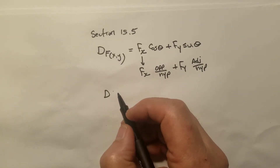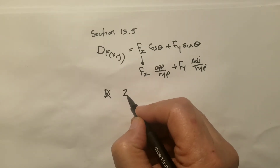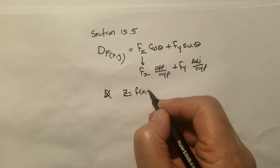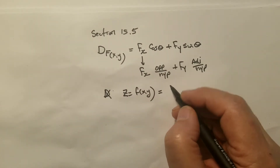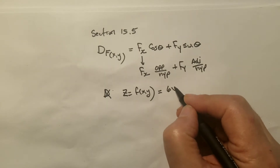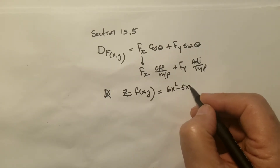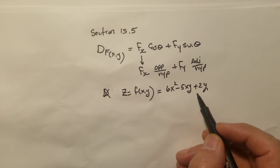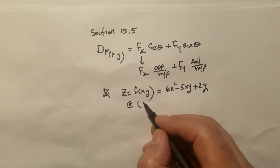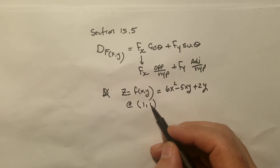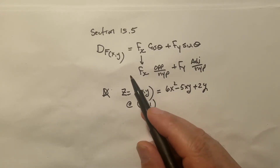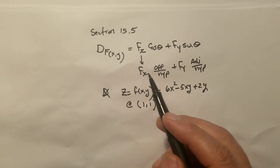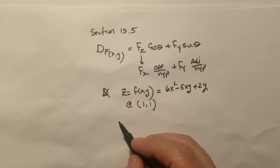For example, if I give you a function z = 6x² − 5xy + 2y, which represents a surface, at the point (1, 1), I want to know how fast you are going up or going down. If the directional derivative is positive, you're going up; if it's negative, you're going down.